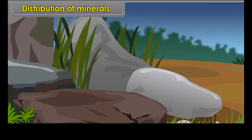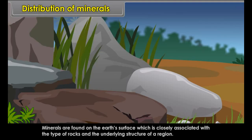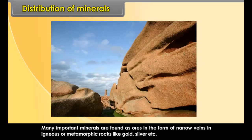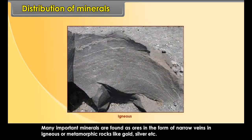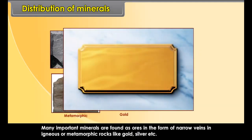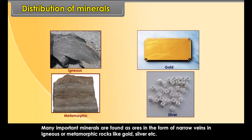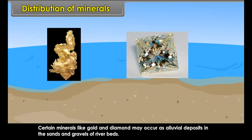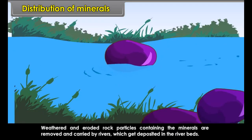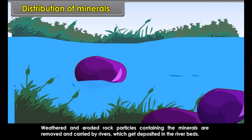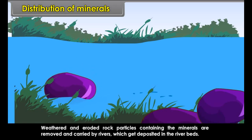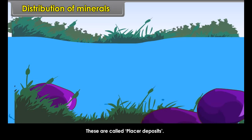Distribution of minerals. Do you know where these minerals are found? Minerals are found on the earth's surface which is closely associated with the type of rocks and the underlying structure of a region. Many important minerals are found as ores in the form of narrow veins in igneous or metamorphic rocks. Certain minerals like gold and diamond may occur as alluvial deposits in the sands and gravels of river beds. Weathered and eroded rock particles containing the minerals are removed and carried by rivers which get deposited in the river beds. These are called placer deposits.